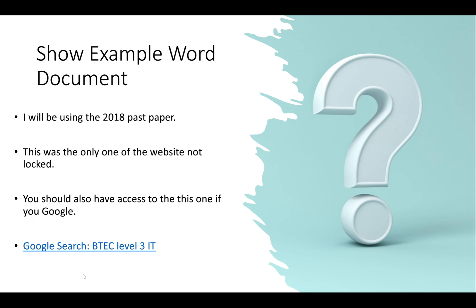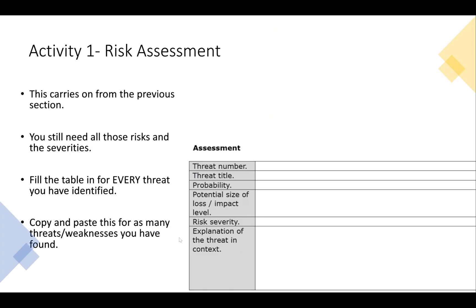I'll be using the 2018 past paper — it's the only one on the website not locked to the public, which is why I've opted for it. I'll put links in the description so you can download it from my Google Drive. You can also Google 'BTEC Level 3 IT' and it will come up on the Pearson website. Everything I'm using is completely free. This is the risk assessment section — it carries on from the previous section, so you'll need all those risks and severities you found.